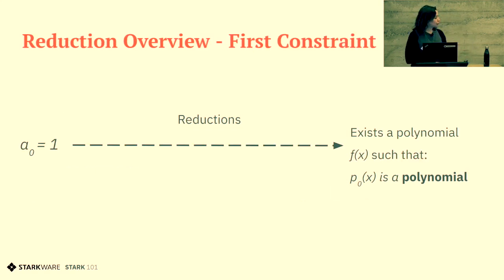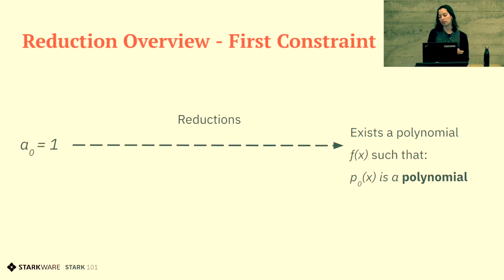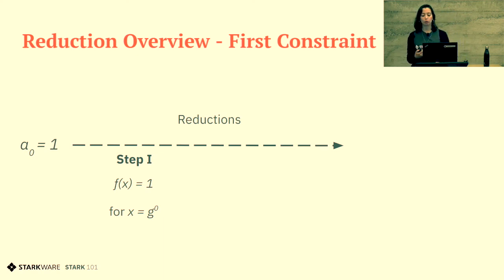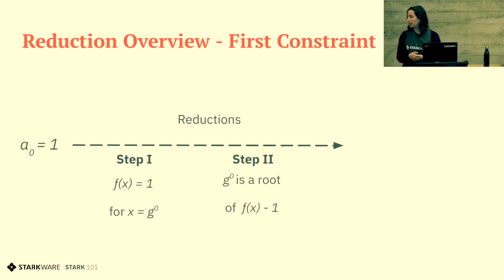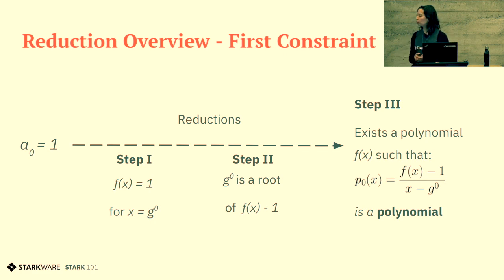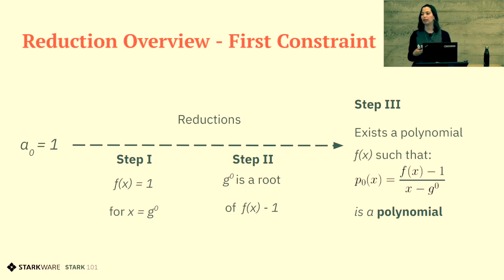Just a short overview of the first constraint to remind us what we did. We started with a₀ equals 1. The first step translated it to the trace polynomial language: f(x) equals 1 for the relevant g. The second step stated that g⁰ is the root of the corresponding polynomial. And finally, we created a rational function from these polynomials and finished with saying there is a polynomial f such that this rational function is a polynomial. That's what we did for the first, second, and third constraints.